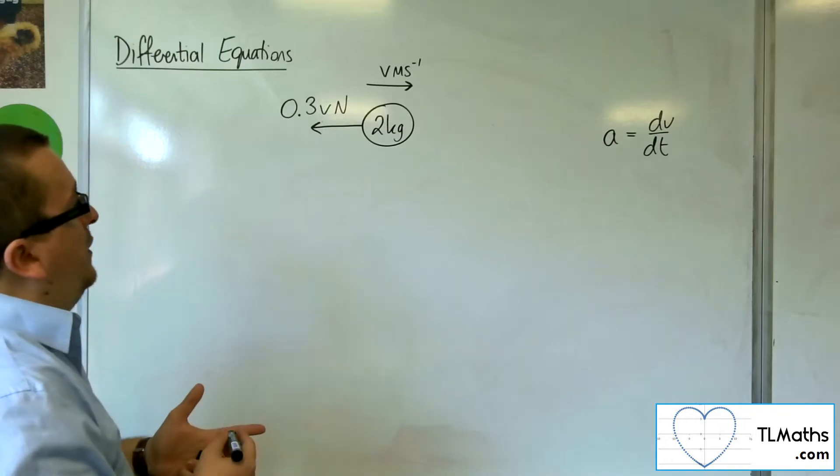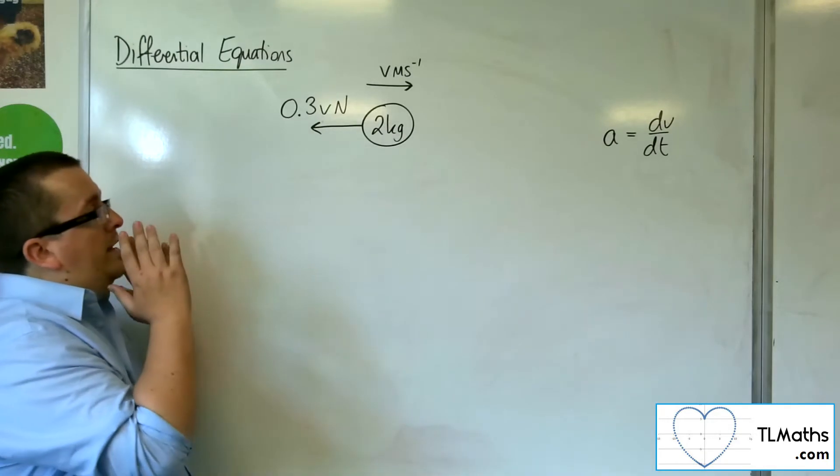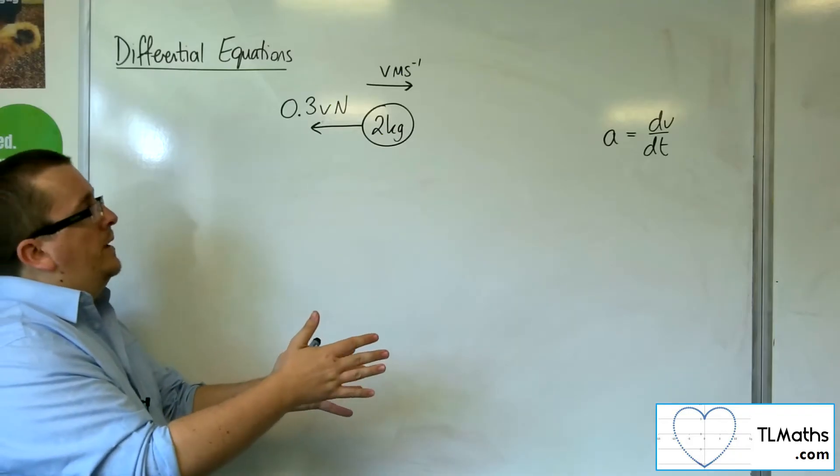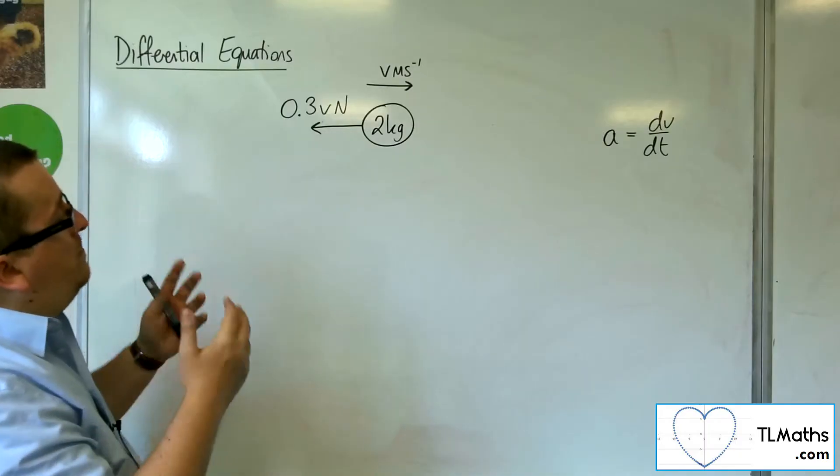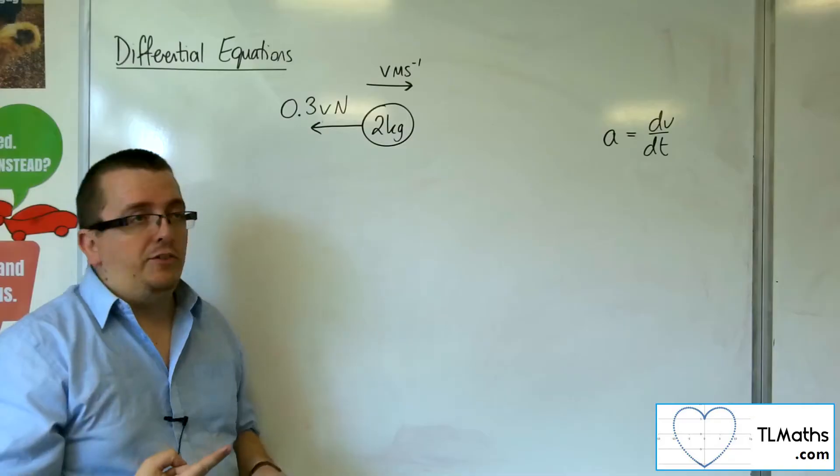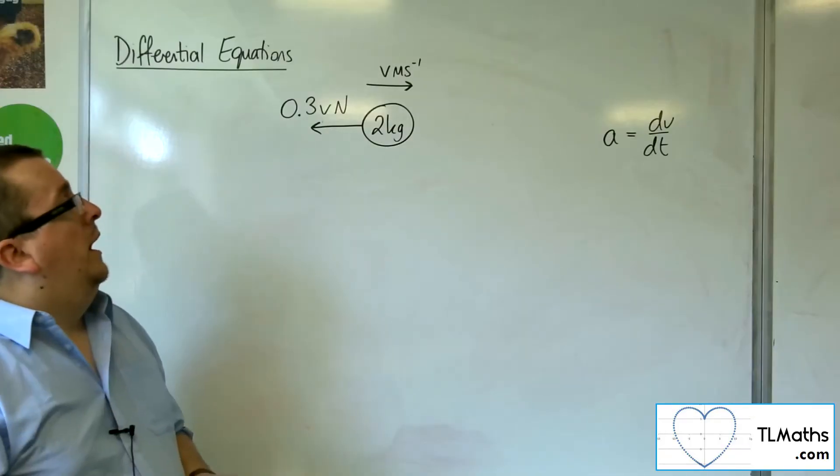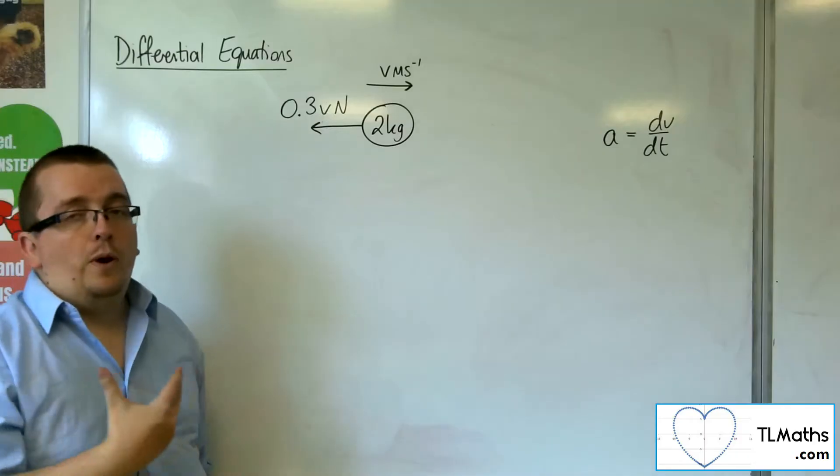So let's say we've got this particle that's travelling to the right at a speed of v metres per second. It's got a mass of 2 kilos and there is a singular force working against it, a resistive force, which is proportional to its velocity.